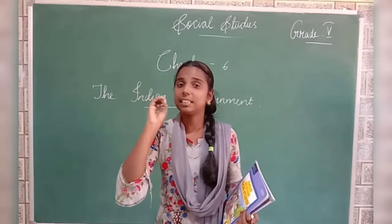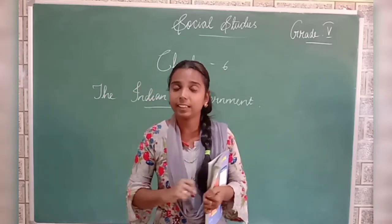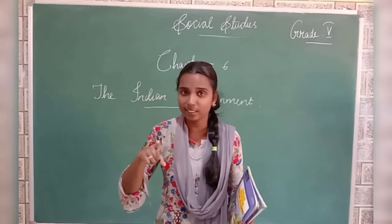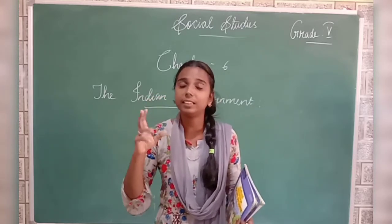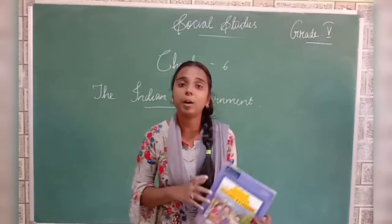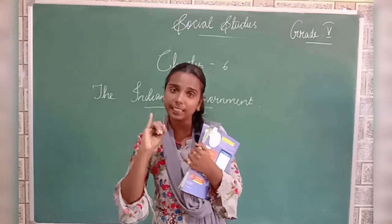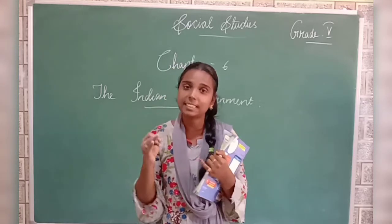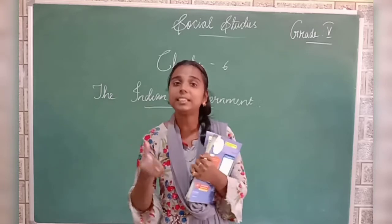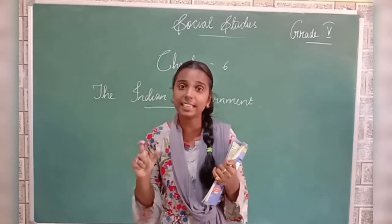We have seen this in our second lesson. In our third lesson, we have learnt in detail about the torrid zone. In this, we have learnt about the equatorial rainforest and also about the tropical deserts. We have seen how will be the climate, how will be the plant life, how will be the animal life, and how will be the life of the people in the equatorial rainforest and the tropical deserts.